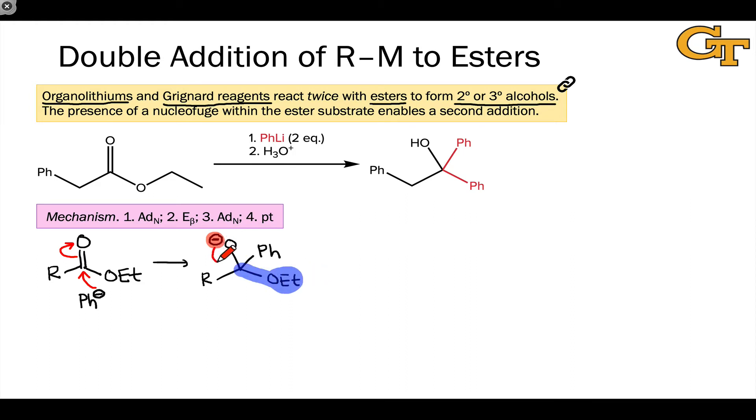What can happen now is beta elimination. And the product of this step is a ketone, in which one of the carbon groups linked to the carbonyl carbon is derived from the organolithium. Really quick, I want to pause here to note something. In essence, what we've done in these first two elementary steps, nucleophilic addition followed by beta elimination, is a net substitution of the nucleophilic phenyl group for OEt. We've done a nucleophilic acyl substitution.